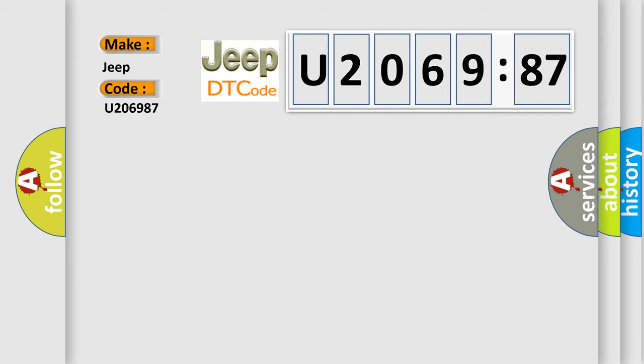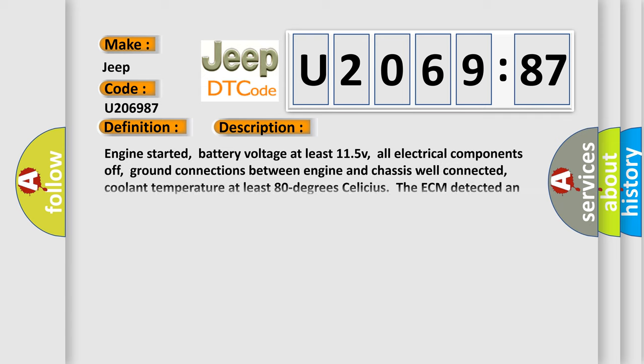The basic definition is turbocharger bypass valve short to B+. And now this is a short description of this DTC code. Engine started, battery voltage at least 11.5V, all electrical components off, ground connections between engine and chassis well connected, coolant temperature at least 80 degrees Celsius. The ECM detected an unexpected voltage condition on the bypass.